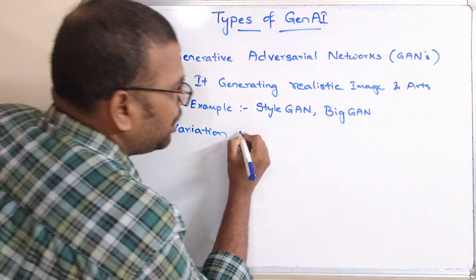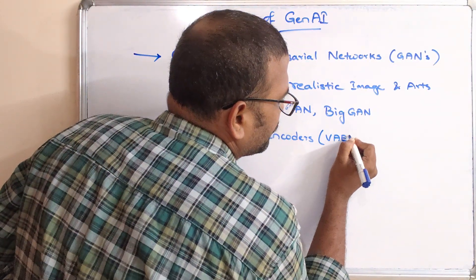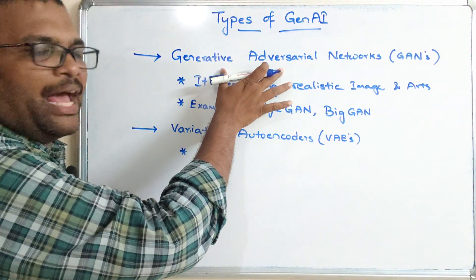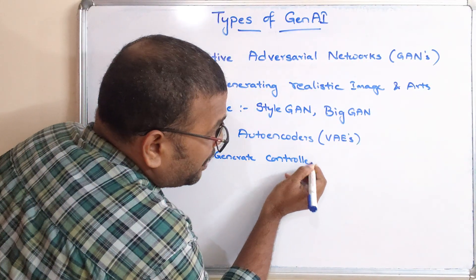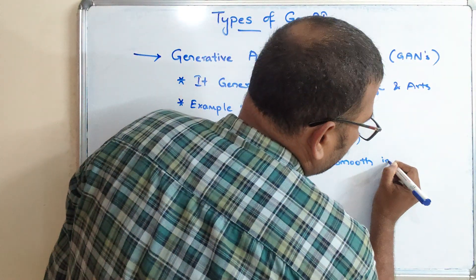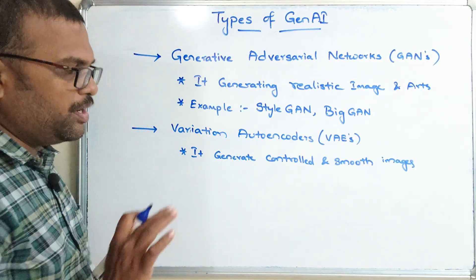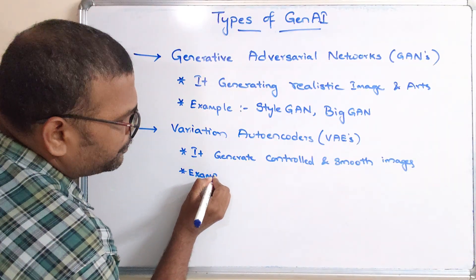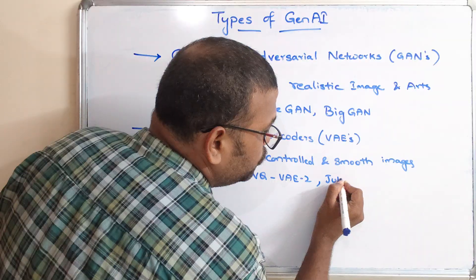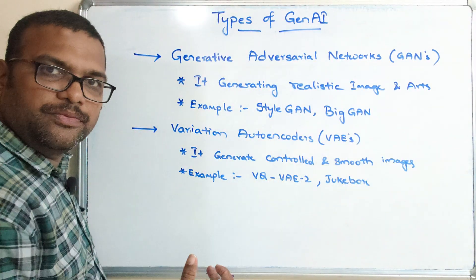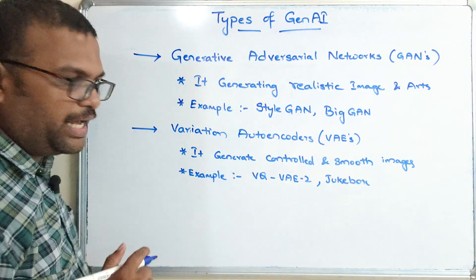The next type is Variational Autoencoders, which we call VAEs. VAEs are similar to GANs, but they generate controlled and smooth images. They start from noise and from that noise generate a normal image. Examples of VAE tools are VQ-VAE-2 as well as Jukebox — these are two examples in order to generate those controlled and smooth images. This is another type of generative AI.